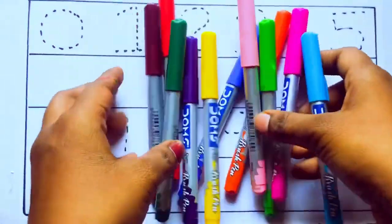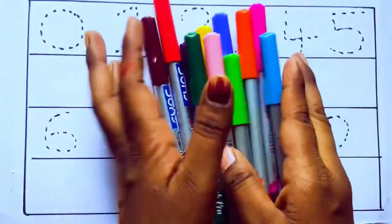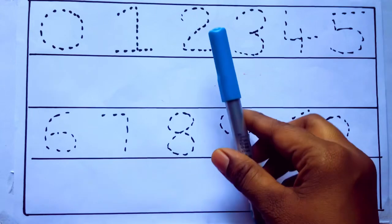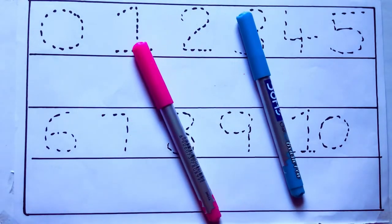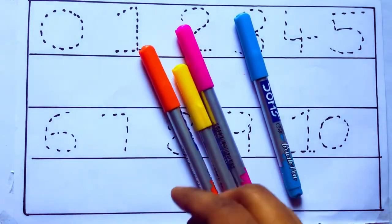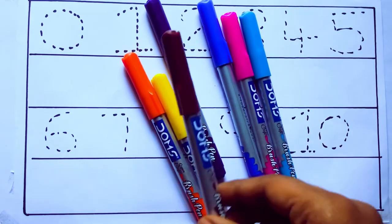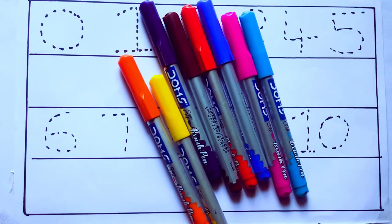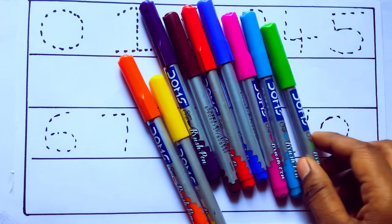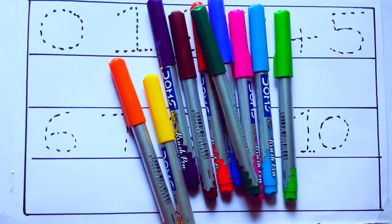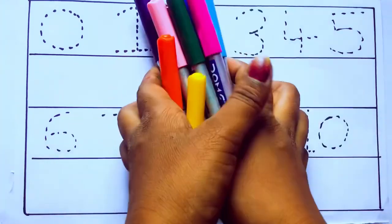Let's learn some colors. These are all the color pencils. Let's learn the names: sky blue color, pink color, yellow color, orange color, violet color, blue color, brown color, red color, green color, and pink color.